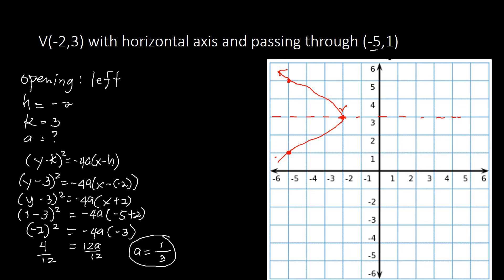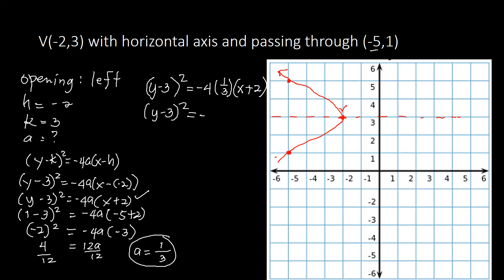Writing the standard equation of the parabola from (Y − 3)² = −4A(X + 2) with A = 1/3: substituting gives (Y − 3)² = −4 · (1/3) · (X + 2), which simplifies to (Y − 3)² = −(4/3)(X + 2). That is the standard equation of this parabola.